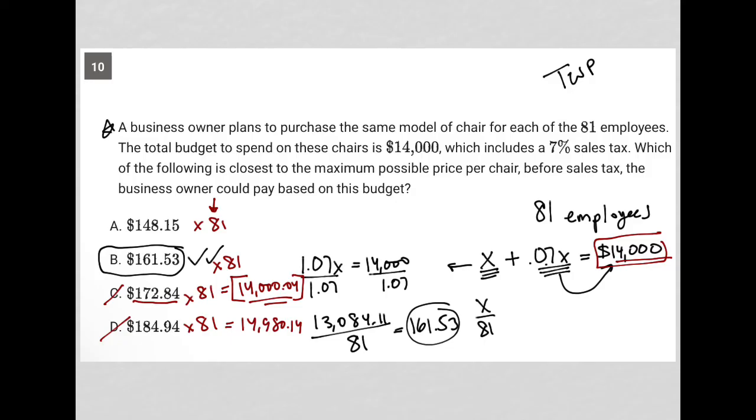So anyway, this is the translation from the word problem. We solved that translation here to figure out the value of the total cost of the chairs pre-tax divided by 81 to figure out the cost per chair. And that's how we get our answer.